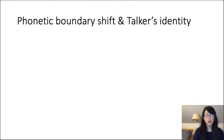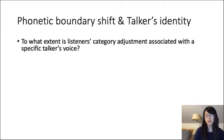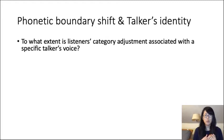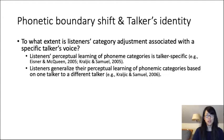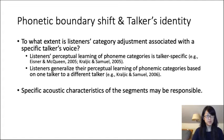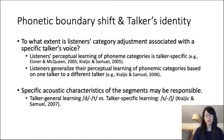Another key question is: to what extent do listeners associate their category adjustment with a specific talker's voice? If we are listening to talker A and talker B, are we adjusting sound category boundaries differently for each talker, or do we apply the adjustment strategy based on talker A's speech to talker B's speech? Some studies show that listeners' adjustment is indeed specific to a particular talker's voice and does not generalize to other talkers, but other studies show the opposite. Why the mixed results?